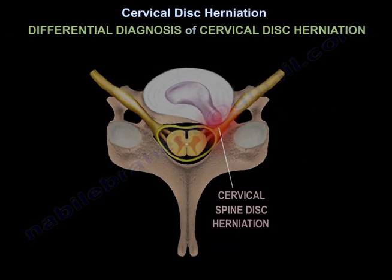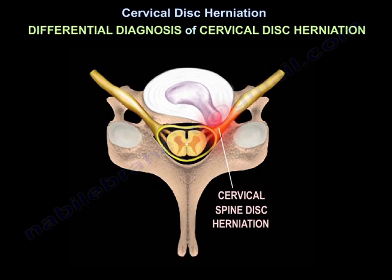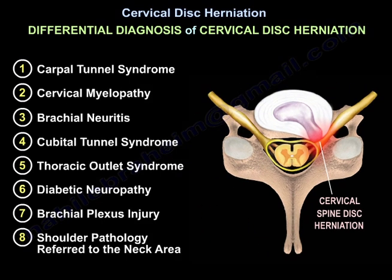The differential diagnosis of cervical disc herniation includes: (1) carpal tunnel syndrome, (2) cervical myelopathy, (3) brachial neuritis, (4) cubital tunnel syndrome, (5) thoracic outlet syndrome, (6) diabetic neuropathy, (7) brachial plexus injury, and (8) shoulder pathology referred to the neck area.